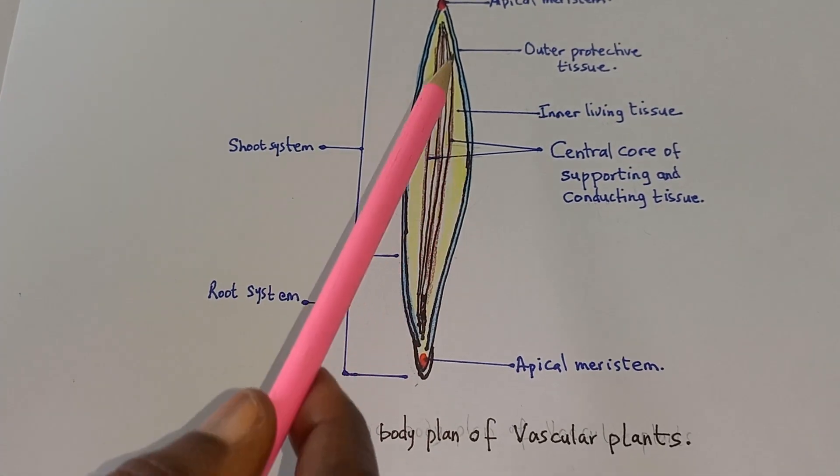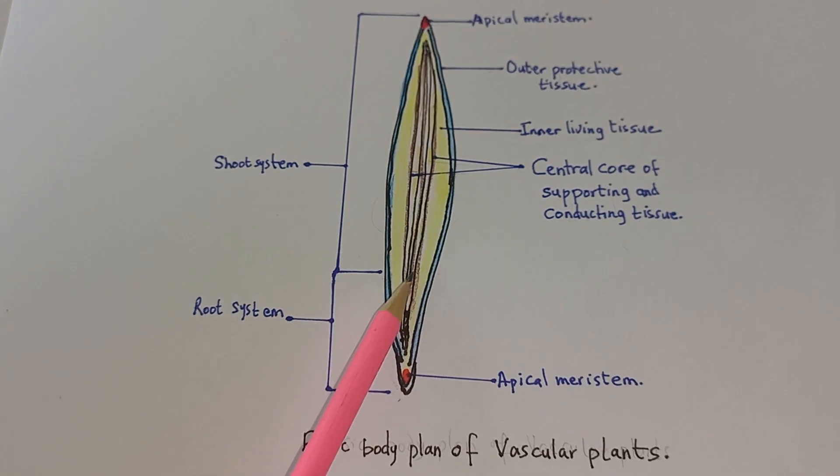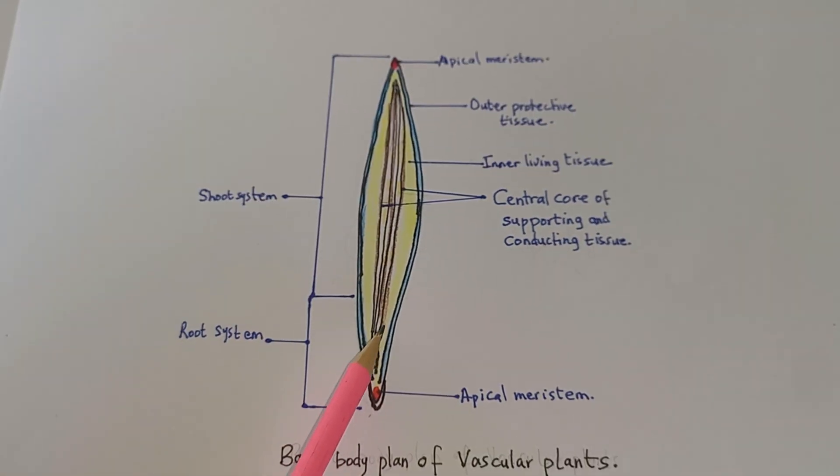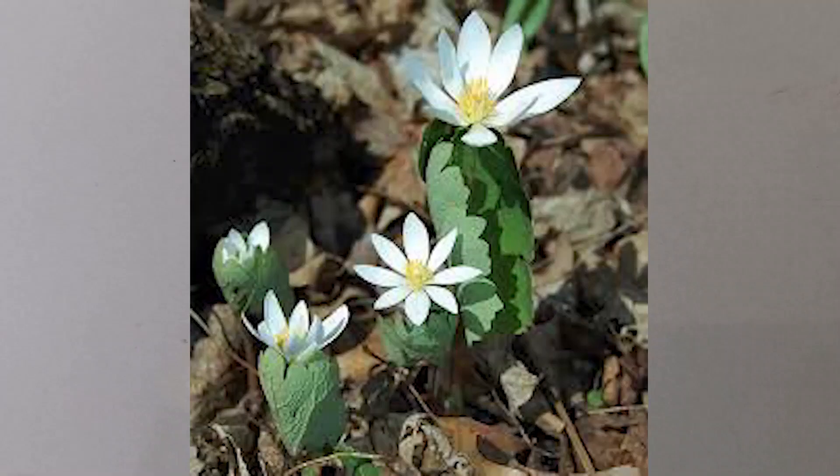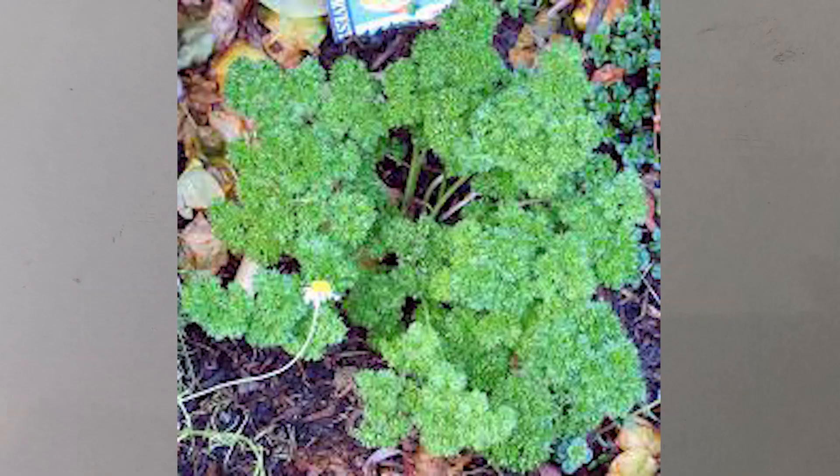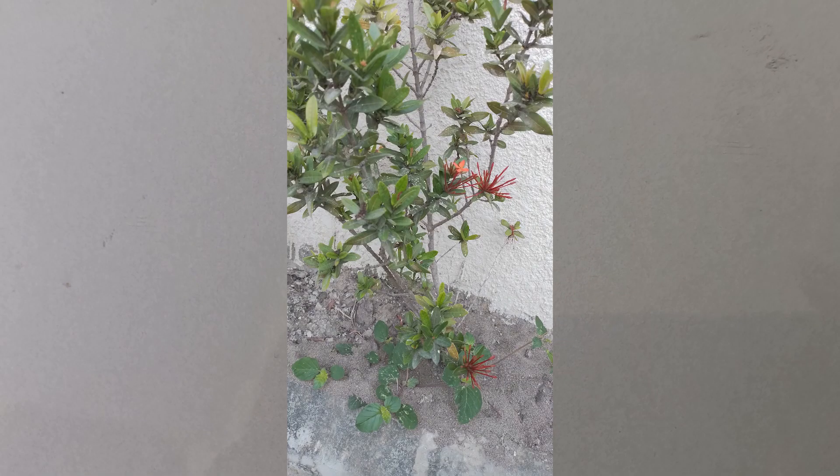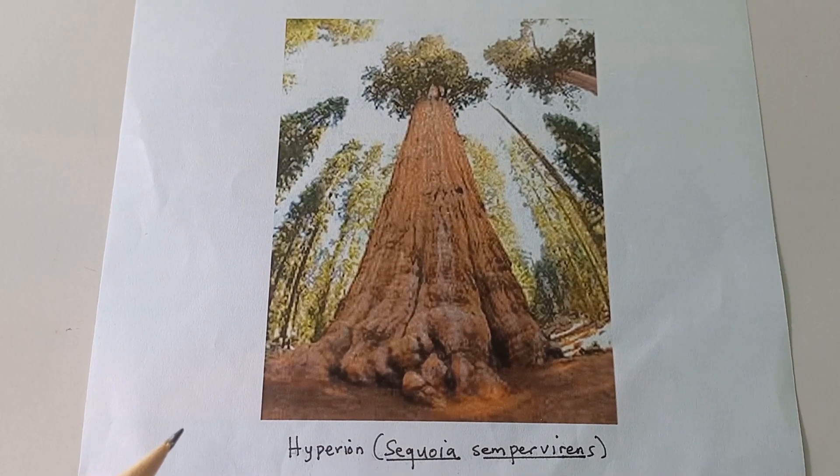Then there is an outer protective covering and then there's living tissue of all vascular plants. Whether the plant is an ephemeral which lives only a few weeks like desert plants, whether it's an annual that lives for one year or biennial like this one that lives for two years or perennial like this shrub or these trees or this one that lives for thousands of years.